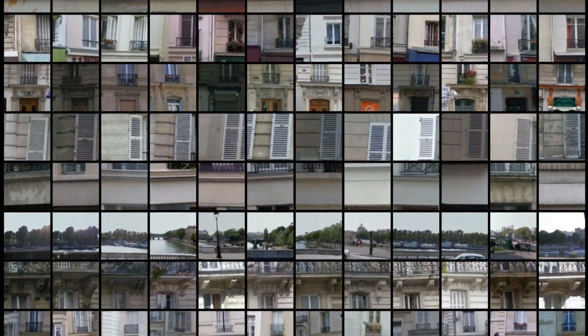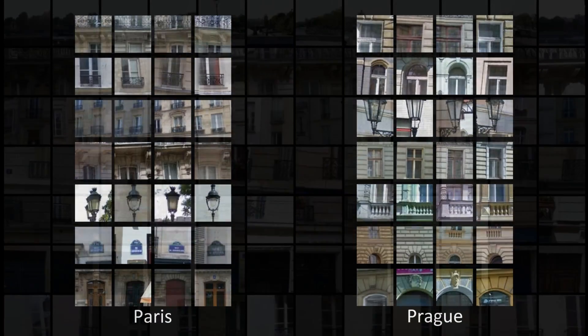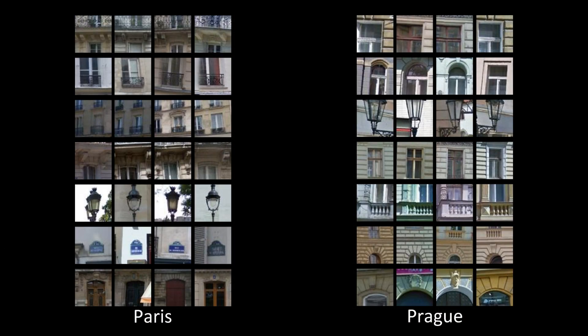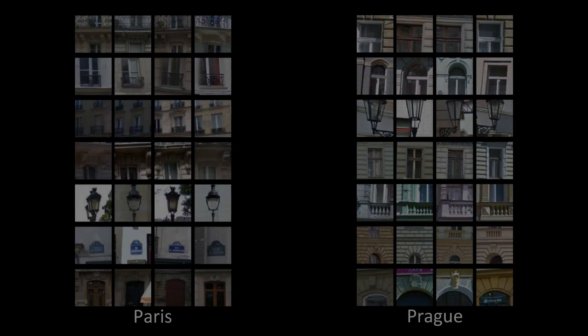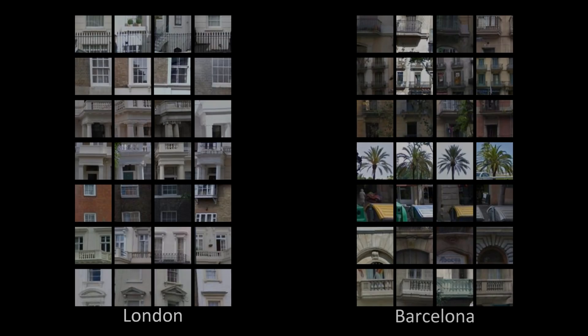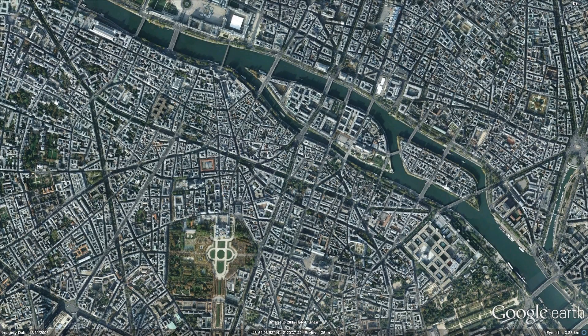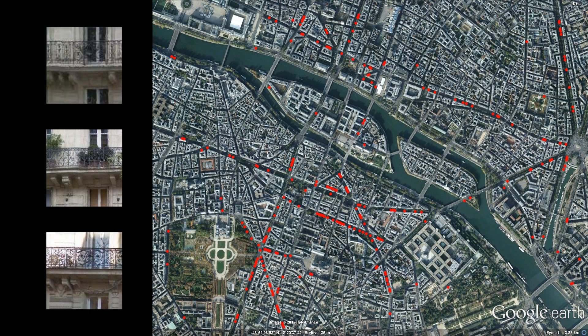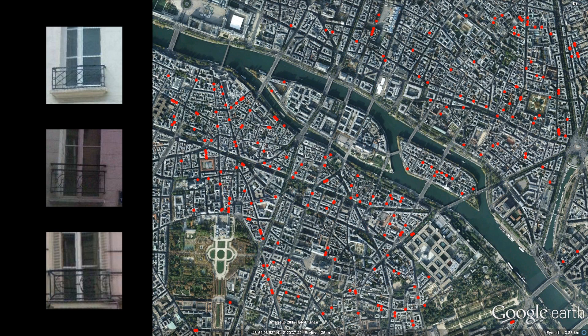We can find similar elements in other cities as well. At a glance, these patches, and the images they came from, provide a summary of the important stylistic elements of streets in different cities. Because we have GPS coordinates for each image, we can also plot our elements geographically. This balcony, for example, only appears on large boulevards, whereas small iron window railings are more common on side streets.